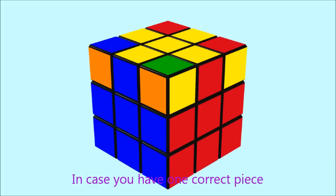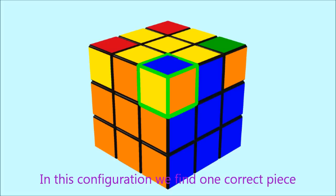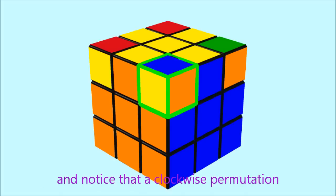In the case you have one correct piece but you need to apply the algorithm twice to finish the step, you could even shortcut by applying the same algorithm mirrored and therefore permutate the three pieces clockwise instead. Here's an example. In this configuration we find one correct piece and notice that a clockwise permutation would be the shortest way to solve it.